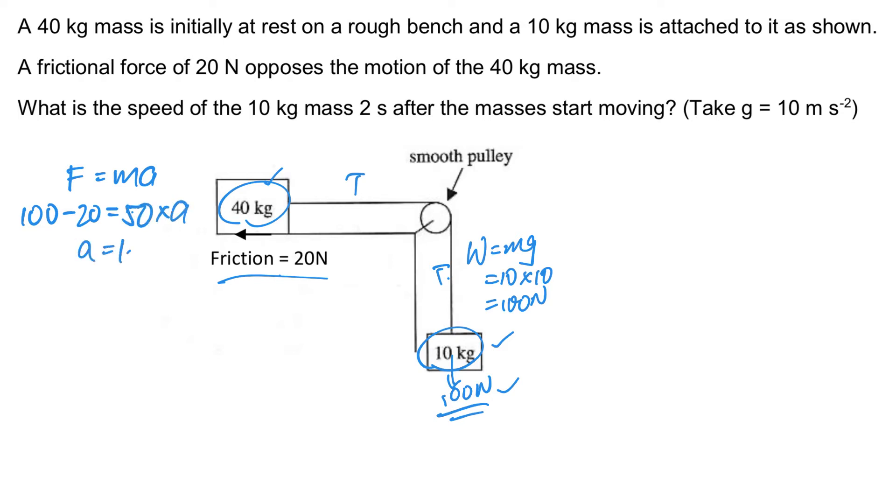From here I can find that the acceleration is 1.6 meter per second squared. So I just need to apply my acceleration formula: a equals v minus u over t. The acceleration is 1.6, the final speed is what I want to find, the initial speed is zero since they are both released from rest, and the time taken is two seconds. So from here I can find that the speed will be 3.2 meter per second. So that will be the answer.